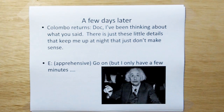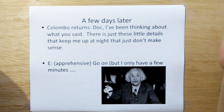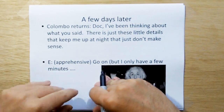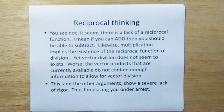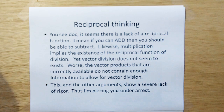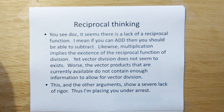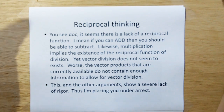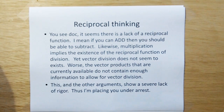Columbo says, 'Doc, I've been thinking about what you said. There's just these little details that keep me up at night that just don't make sense.' Einstein apprehensively says, 'All right, go on, but I only have a few minutes.' Then, using reciprocal thinking, Columbo says, 'It seems there's a lack of reciprocal function. If you can add, then you should be able to subtract — that's a reciprocal function. Likewise, if we have multiplication, that implies the existence of the reciprocal function of vector division. Yet vector division does not seem to exist. Worse, the vector products that are currently available do not contain enough information to allow for vector division. This and other arguments show that there's a severe lack of rigor in this component of the field of mathematics.'